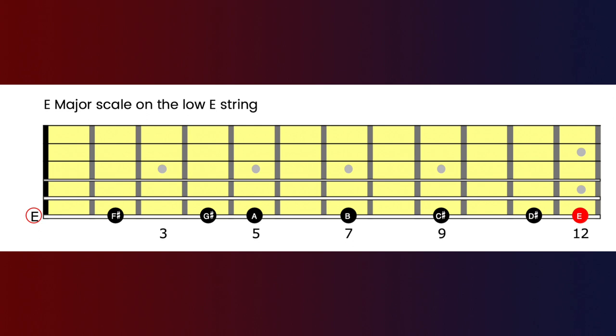Let's do one more on another string — starting from an open string, which will look a little different. On the low E string: open E, move a tone to F sharp at fret two, a tone to G sharp at fret four, semitone to A at fret five, tone to B at fret seven, tone to C sharp at fret nine, tone to D sharp at fret eleven, and a semitone back to E.